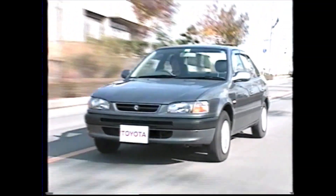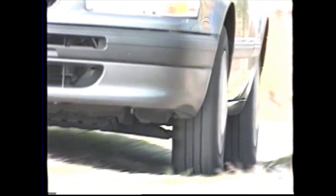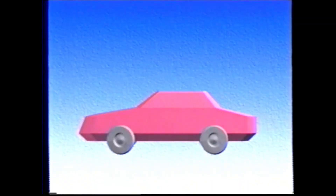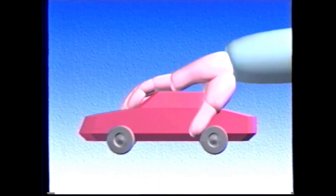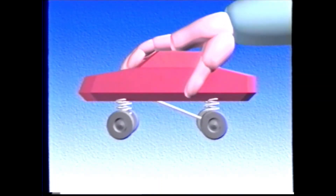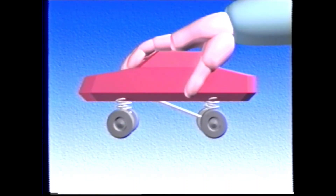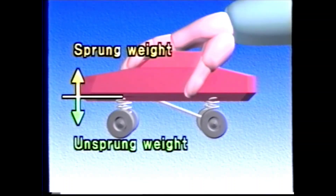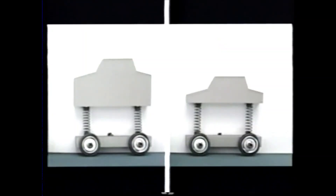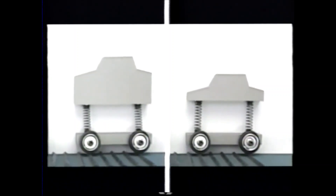The relationship between unsprung and sprung weight affects riding comfort and steering stability. If you grab the car body and raise it up, the wheels, axles, and brake system hang down. The weight of these components is called the unsprung weight, while the weight of the other components including the body is called the sprung weight. Here is a demonstration to show how this relationship affects riding comfort and steering stability.